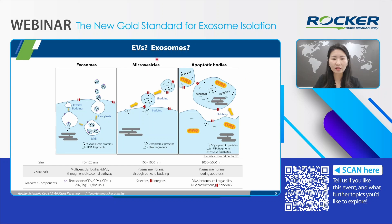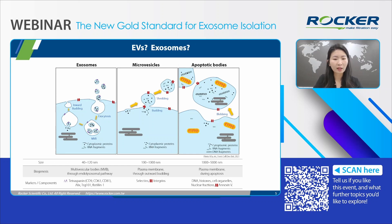Then, microvesicles, MVs. They are larger EVs ranging from 100 to 1000 nm and formed by budding from the plasma membrane. Their composition depends on the cell membrane, such as integrins and selectins. The last subtype is apoptotic bodies, ABs. They are the largest EVs, ranging from 1 to 5 micrometers, released during apoptosis through outward blebbing of the membrane. Their cargo is quite different from others — they harbor cytoplasm, organelles, histones, etc.